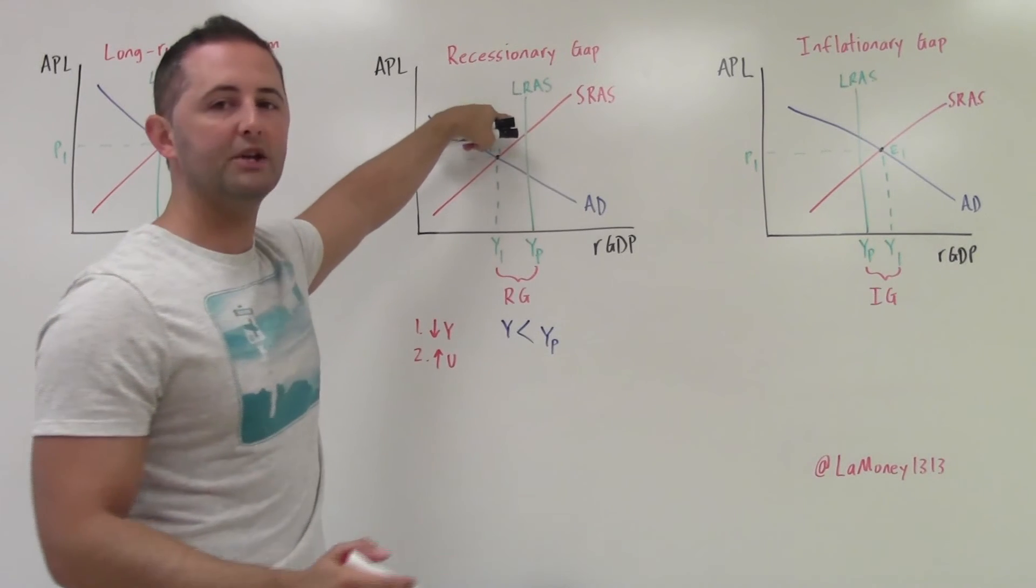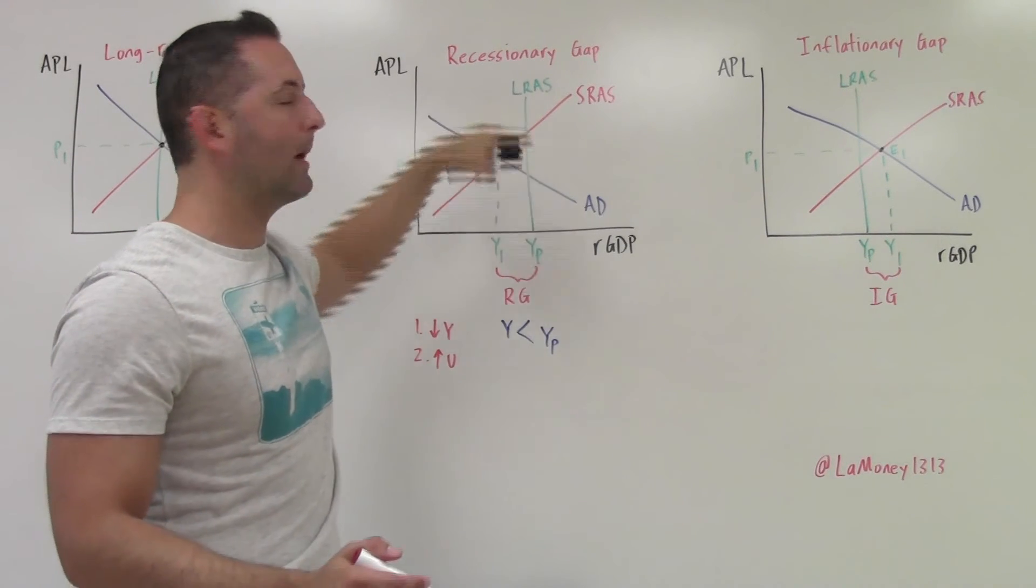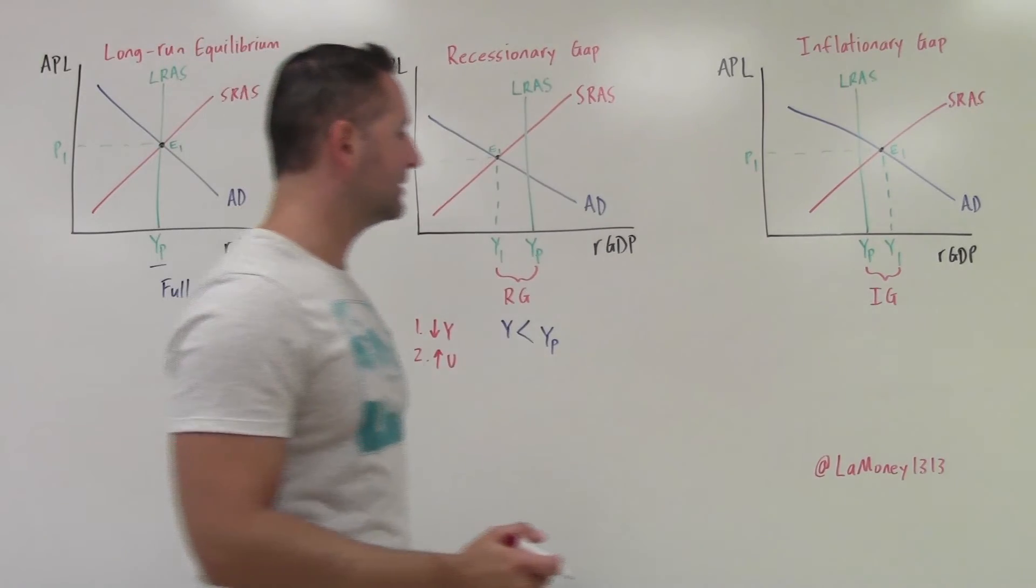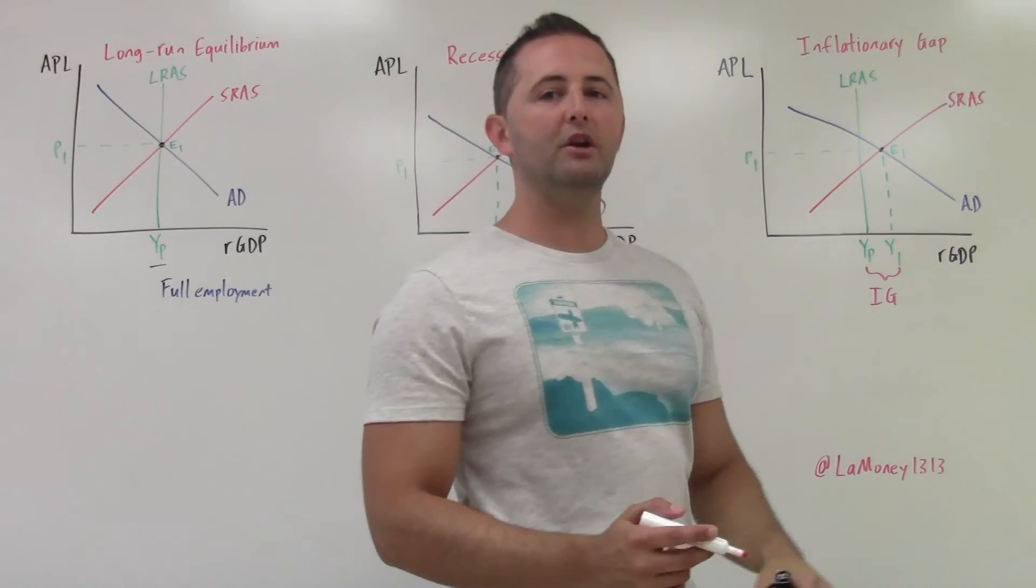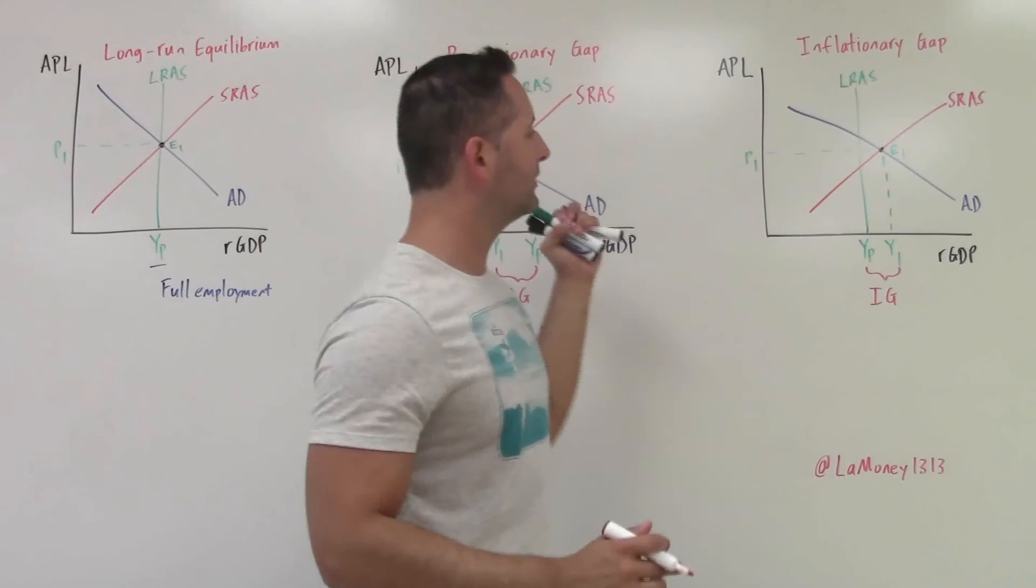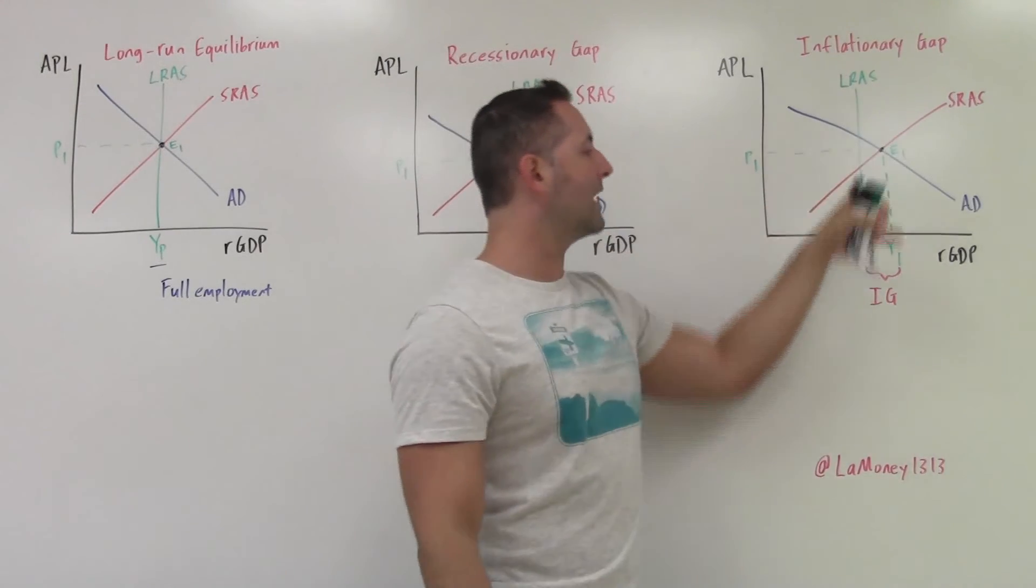So anytime we're in a recessionary gap, or anytime we're to the left of LRAS, we have high unemployment. On the other hand, the inflationary gap, so we can move through this one. It's not too different. It's just the exact opposite, really.